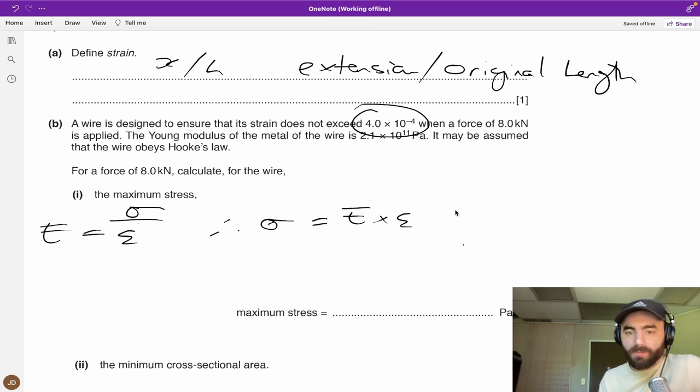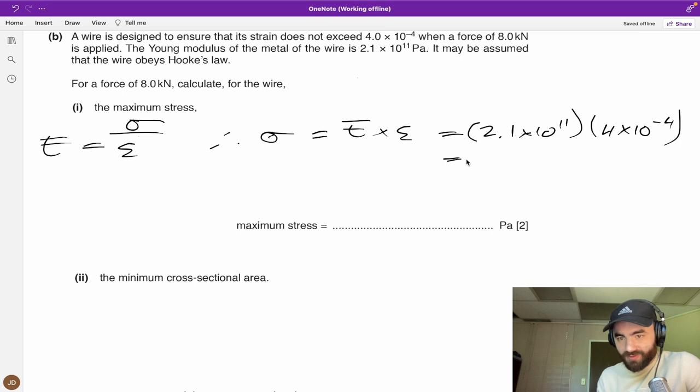For this maximum strain, because it doesn't exceed this, when it's just at its greatest, well the stress would be at its maximum. They're proportional. So this is 2.1 times 10 to the 11 times 4 times 10 to the negative 4. This equals 8.4 times 10 to the 7 pascals, because stress is force over area.